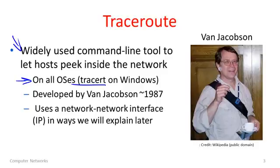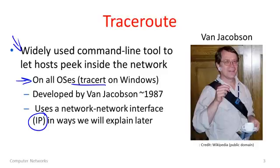TraceRoute was developed by someone called Van Jacobsen. We'll hear about him more, especially when we get to TCP congestion control. He was one of the pioneers of computer networking as the internet grew up. TraceRoute works by using the IP protocol — the internet protocol — which describes how different hosts and routers talk to one another. It uses this protocol in sneaky ways that we'll get to later.